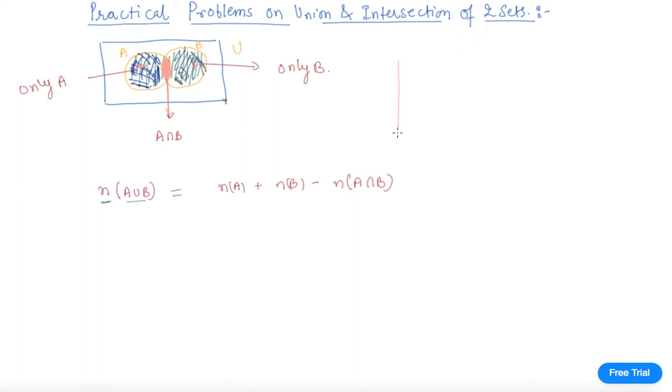Now let's say we are given three sets. Problems on three sets are very rare in NCERT or your school syllabus, but you should know at least. This is the universe, this is A, this is B, and this is C.